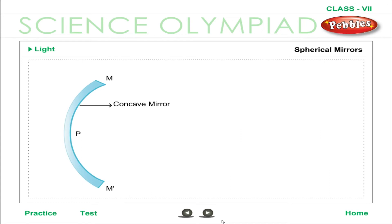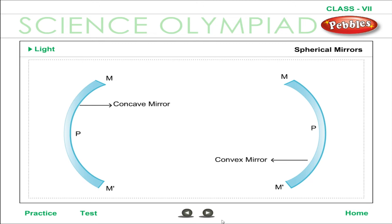There are two types of spherical mirrors: concave mirrors and convex mirrors. In a concave mirror, its outer surface is polished, whereas in a convex mirror, its inner surface is polished. Usually a spherical mirror is represented by drawing its cross-section.